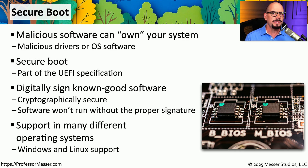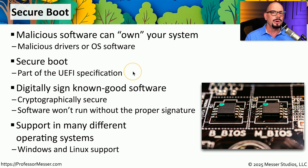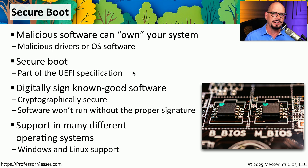If you're trying to run a very old operating system on your computer, you may find that the Secure Boot feature doesn't allow that OS to run because it doesn't have a digital signature for that particular software. In that case, you may need to disable Secure Boot to start up that older software. When you want to run newer software, you'll want to re-enable Secure Boot so that it will work properly with the modern operating system.